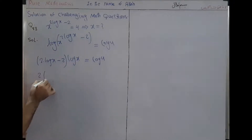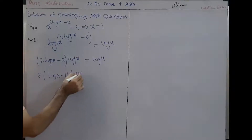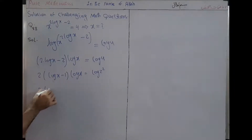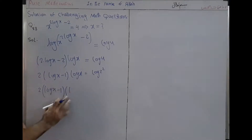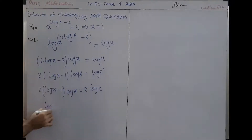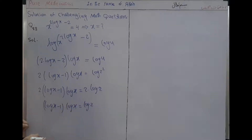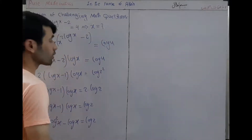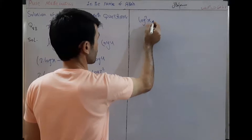Now we multiply: 2 into log x minus 1 into log x is equal to log 2 squared, which is 2 multiplied by log 2. Expanding: log squared of x minus log x, multiplied by minus 1 into log x, gives log x squared minus log x.